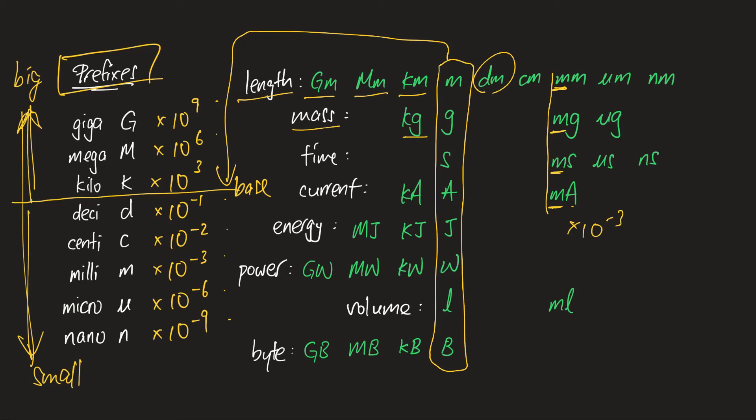And do you recall, if it's above the base here—like your gigameter, megameter, kilometer—these are considered bigger units. And deci onwards, these are considered smaller units.